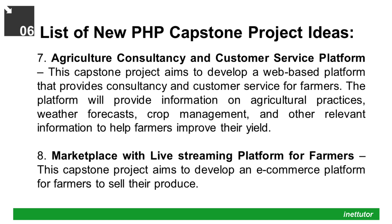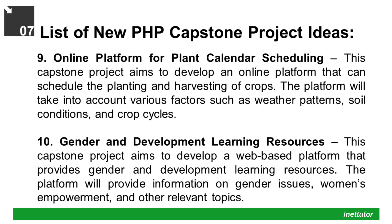Project 7: Agriculture Consultancy and Customer Service Platform — This capstone project aims to develop a web-based platform that provides consultancy and customer service for farmers. The platform will provide information on agricultural practices, weather forecasts, crop management, and other relevant information to help farmers improve their yield. Project 8: Marketplace with Live Streaming Platform for Farmers — This capstone project aims to develop an e-commerce platform for farmers to sell their produce. Project 9: Online Platform for Plant Calendar Scheduling — This capstone project aims to develop an online platform that can schedule the planning and harvesting of crops. The platform will take into account various factors such as weather patterns, soil conditions, and crop cycles.